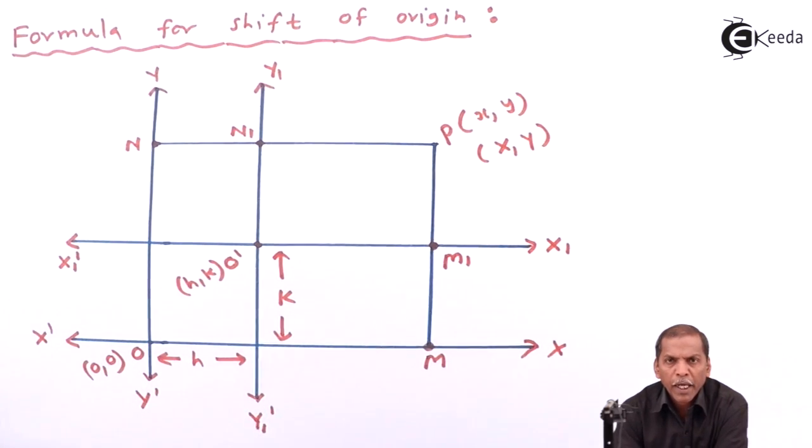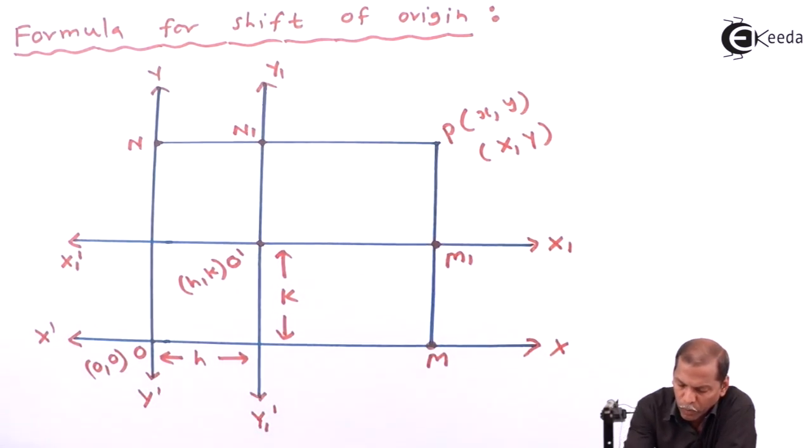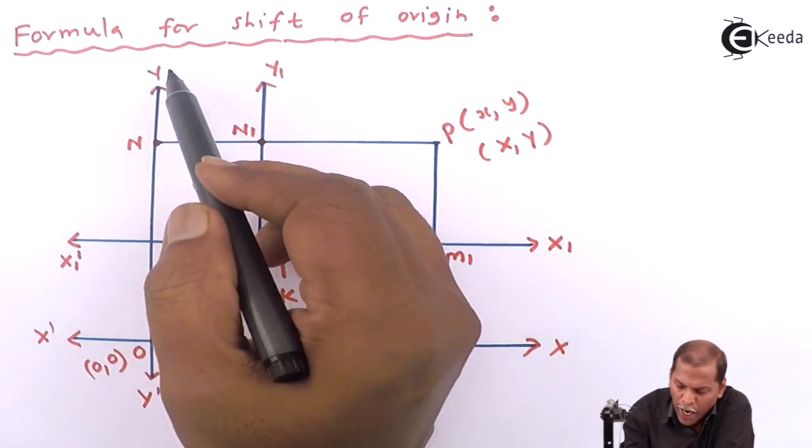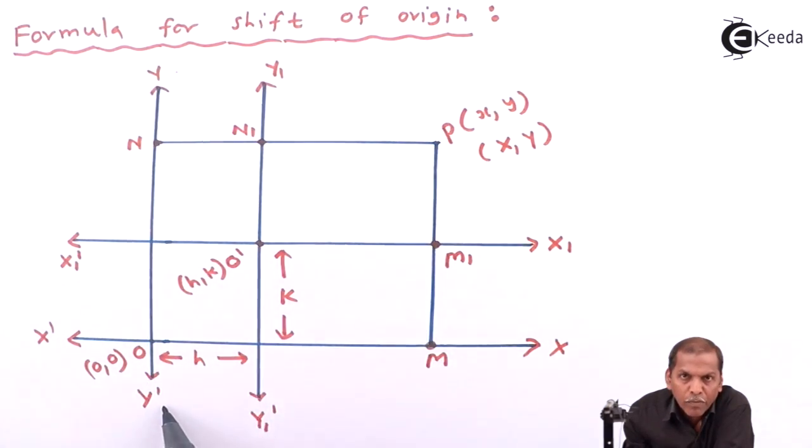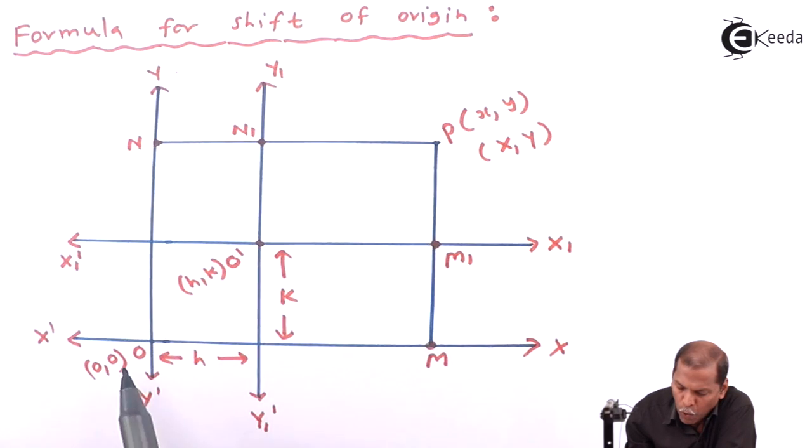Hello friends, now we see the formula for shift of origin of the chapter locus. Here we consider the horizontal line XOX' as the x-axis and the vertical line YOY' as the y-axis. The point of intersection of the x-axis and y-axis is called origin O, whose coordinates are (0,0).